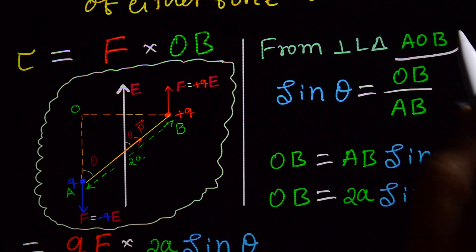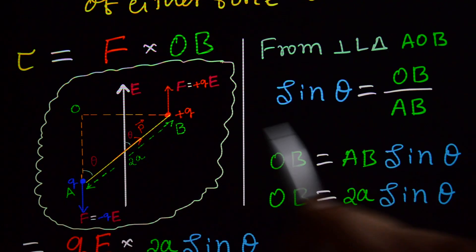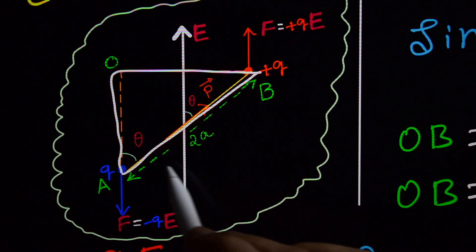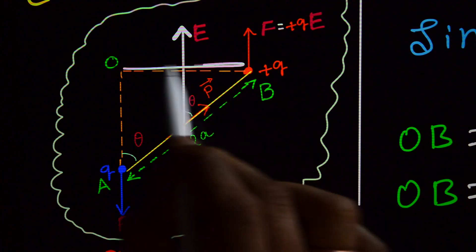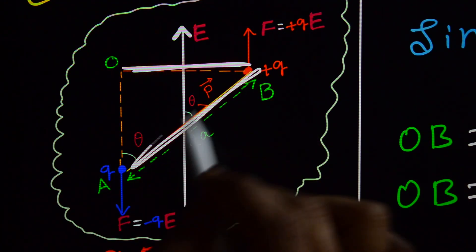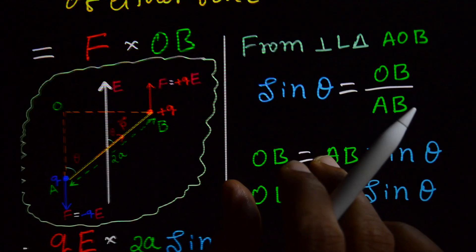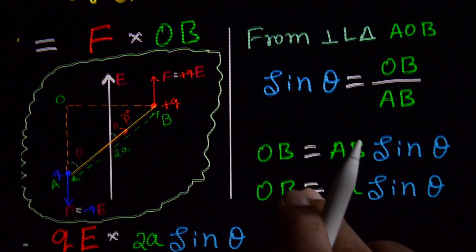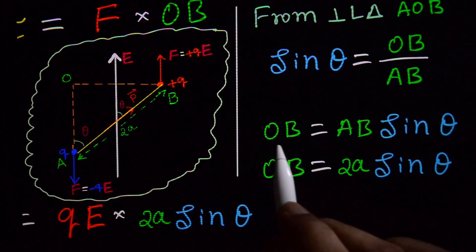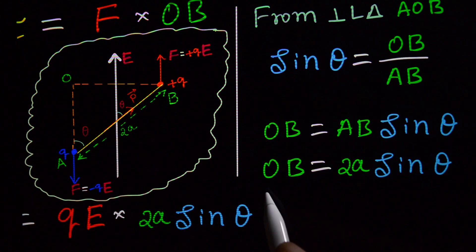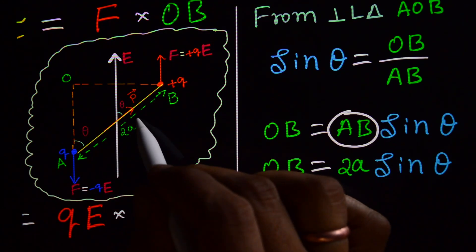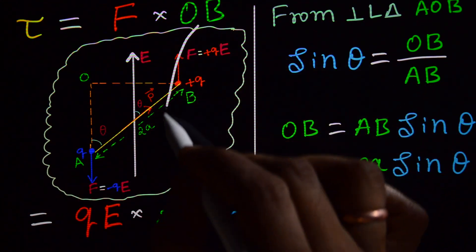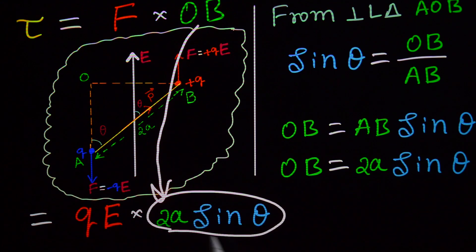From the right-angle triangle OAB, sin theta equals OB divided by AB, where AB is the hypotenuse. Therefore, OB equals AB into sin theta. Since AB equals 2A, we get OB equals 2A sin theta.